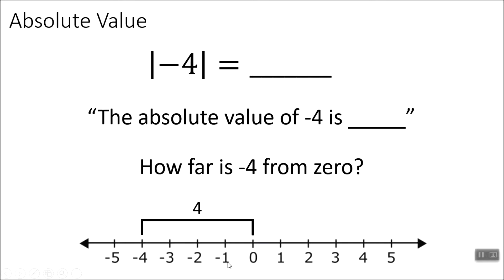What you don't want to do is count 0 as a starting point. I've seen some kids go 1, 2, 3, 4, 5 — you don't want to do that. It's 4 away. Negative 4 is 4 away from 0. So the absolute value of negative 4 is 4.